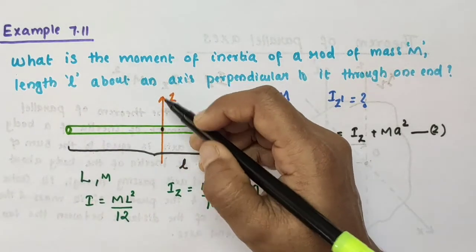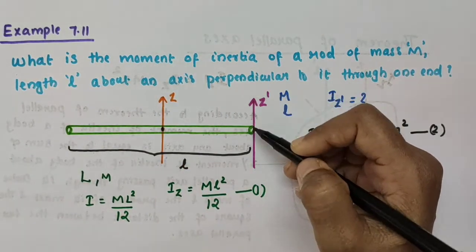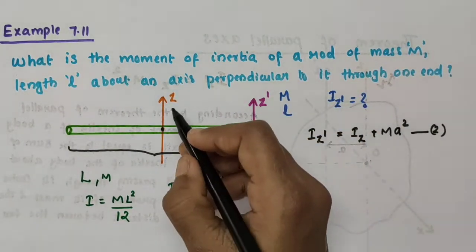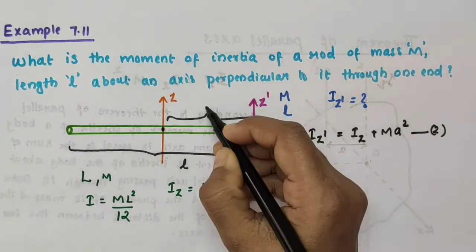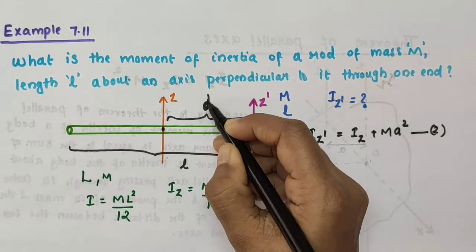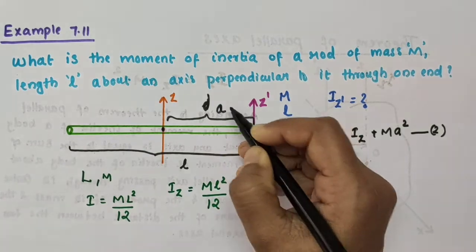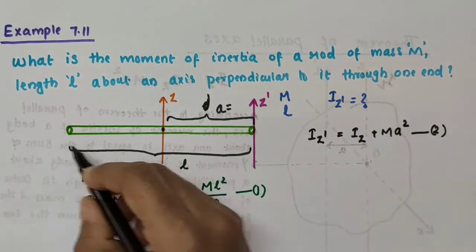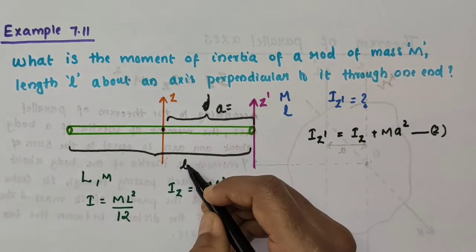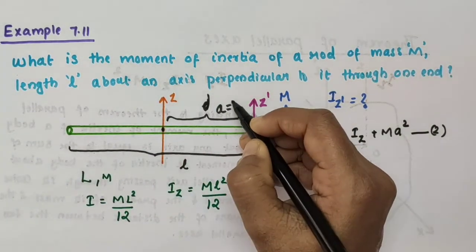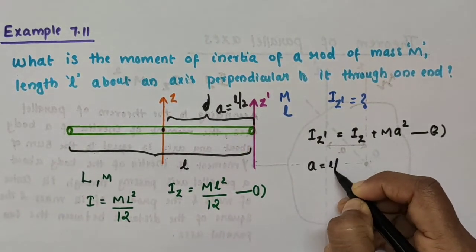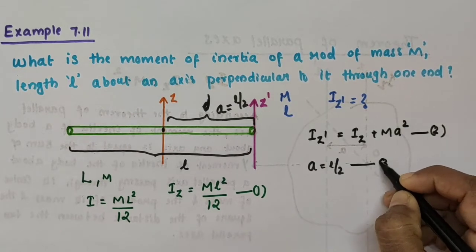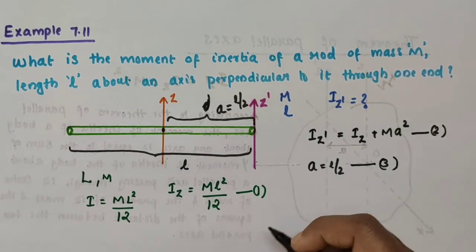We have the z-axis here and the z-dash axis here; both are parallel. The distance between them — this distance — is small letter a. From here to here, the total length is l, so half of that is l/2. Therefore a = l/2, and I am taking this as equation number 3.